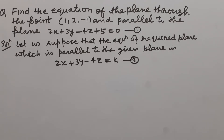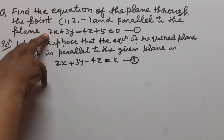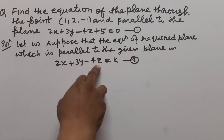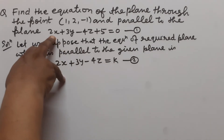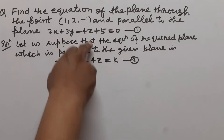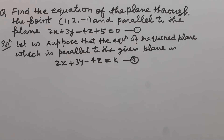Since we know that in parallel planes, the coefficients of x, y, z are the same, but the constant term is different. So we write the equation of the plane which is parallel to the given plane 1 as 2x + 3y - 4z = k. Here we can see that the coefficients of x, y, z in both planes are the same, but the constant term is different because these are parallel planes.